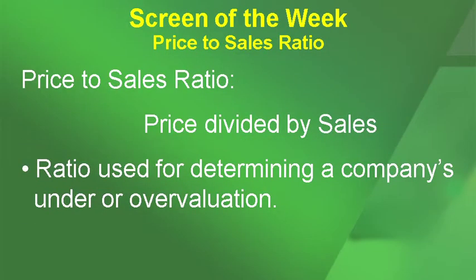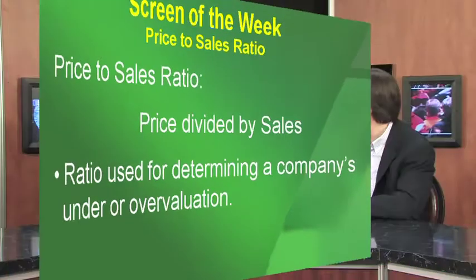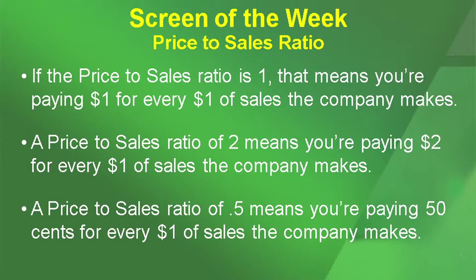For those who have never heard us talk about this, what exactly is Price to Sales Ratio? Let's start off with a definition. Price to Sales Ratio is simply price divided by sales, and it is a ratio used for determining a company's under or over valuation. If the Price to Sales Ratio is 1, that means you're paying $1 for every $1 of sales the company makes. A ratio of 2 means you're paying $2 for every $1 of sales. The lower the ratio, the better — a ratio of 0.5 means you're paying $0.50 for every $1 of sales. And paying less than $1 for a dollar's worth of something is a good bargain.